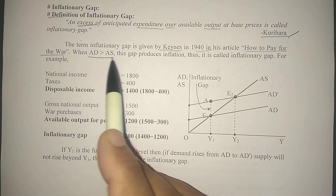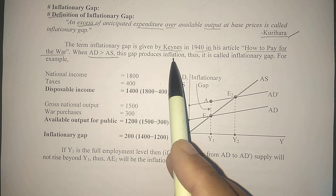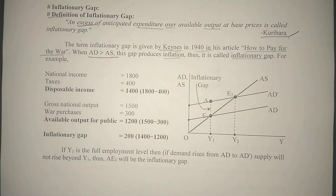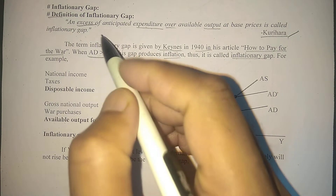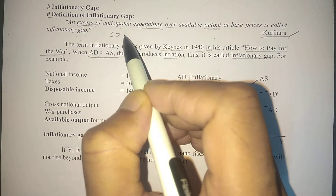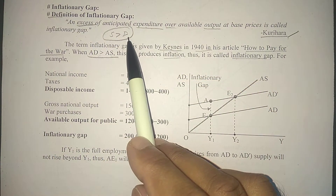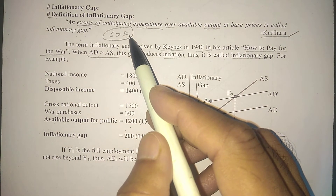When aggregate demand is greater than aggregate supply — this is the main point of inflationary gap. This gap produces inflation, thus it is called inflationary gap. Inflationary gap: when demand is greater than supply, then inflationary gap.